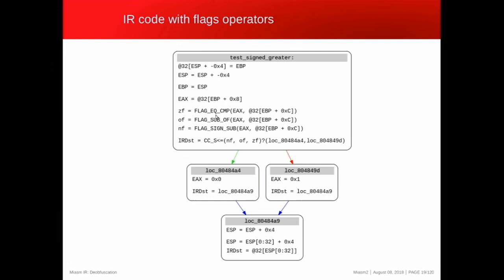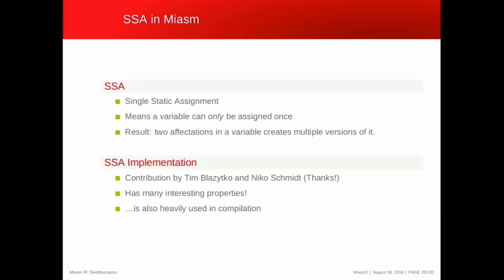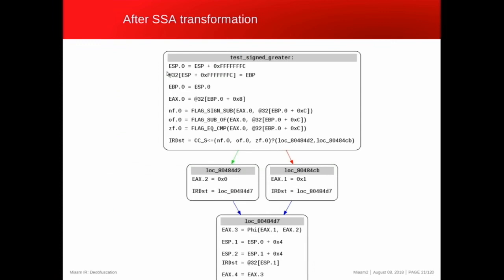The next step is to use Static Single Assignment (SSA) form in MIASM for propagation — a new feature contributed by Tim Blazizko and Nico Schmitz, also common in compilers. Each register is assigned only once, so you get multiple versions like EAX0, EAX1, EAX2, etc. Once in SSA form, you can do expression propagation — more than just constant propagation — while respecting rules such as not propagating across call operators or read-write memory barriers.